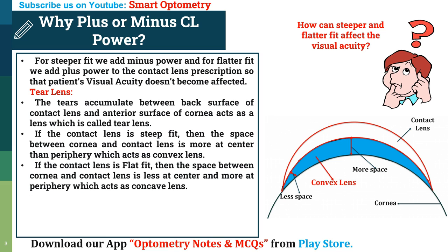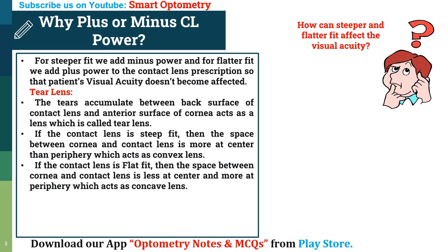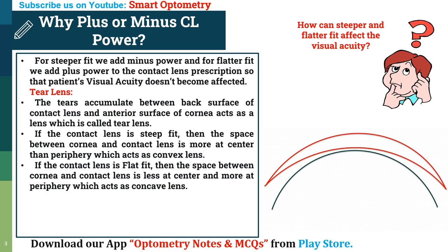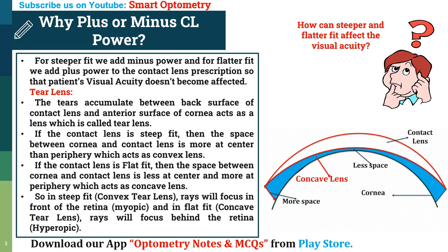And if the contact lens fit is a flat fit, then the space between the cornea and contact lens is less at the center and more at the periphery, which acts as a concave lens. This is an example of flat fit. Here, this is the cornea, this is the contact lens, and the space between the contact lens and cornea is less at the center and more at the periphery, due to which a concave tear lens is formed.